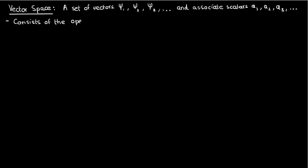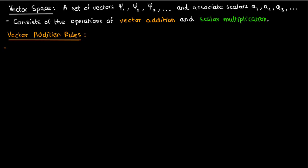a vector space also requires two operations, vector addition and scalar multiplication. Now both of these operations have to follow a certain set of rules, otherwise the set V won't be considered a vector space.